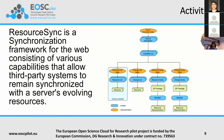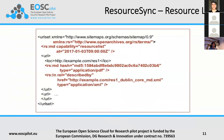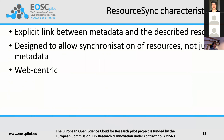One thing I want to highlight about ResourceSync is that it is based on sitemaps. In the sitemaps you can provide an explicit link using the 'described by' relation type, which links a PDF with the metadata in an XML file through this 'described by' relationship. This is very important — it is something missing in OAI-PMH and is in fact a killer feature of ResourceSync for synchronizing scholarly publications.